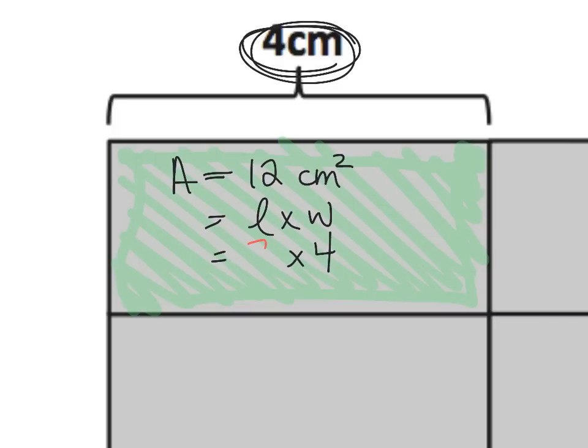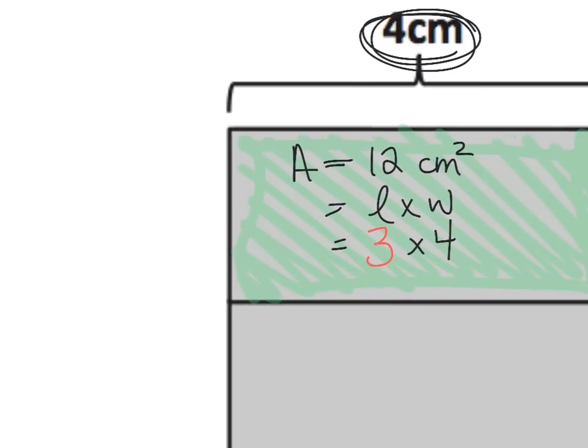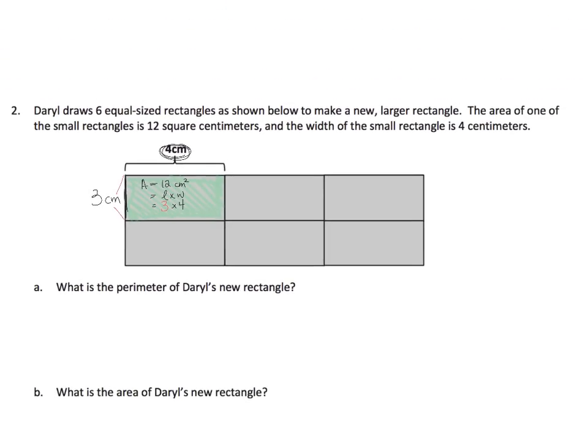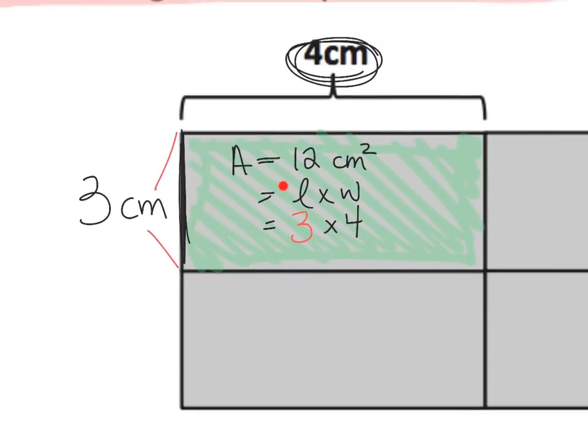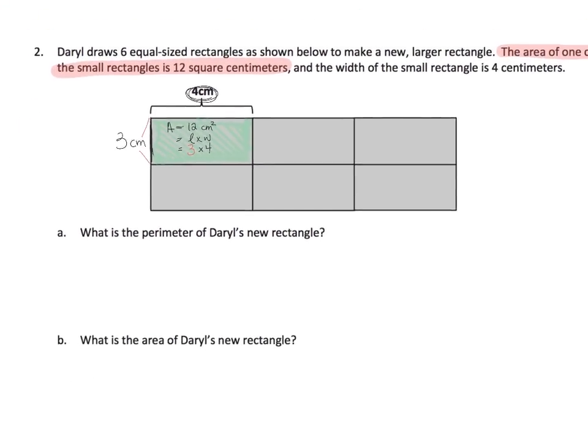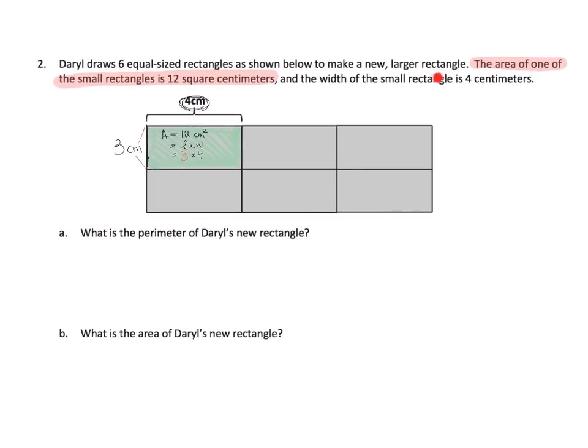So in hardly any words at all, we are supposed to have to figure out that this length right here, from here to here, is 3 centimeters. So when it says the area of one of the small rectangles is 12 square centimeters, we needed to do all of this thinking in order to understand that if the area is 12 centimeters squared, that means this little distance has to be 3 centimeters. And then it says, and the width of the small rectangle is 4 centimeters. Well, we knew that because the picture said so. All right, so fortunately this little piece doesn't add any information that we didn't already know.